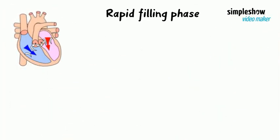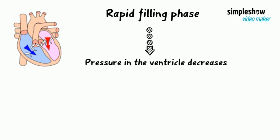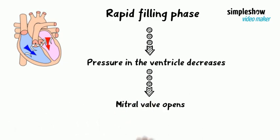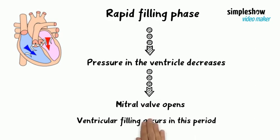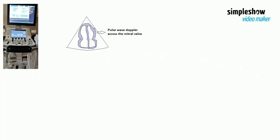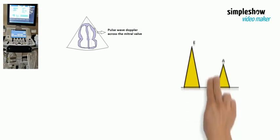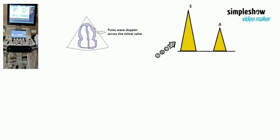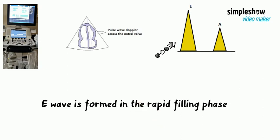During the rapid filling phase, the pressure in the ventricle decreases. Due to this pressure difference, the mitral valve opens and ventricular filling occurs. In an echo, placing a pulse wave Doppler across the mitral valve will yield two waveforms; the first wave occurs due to the mitral valve opening.